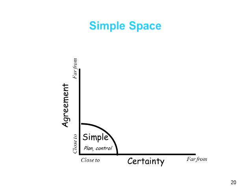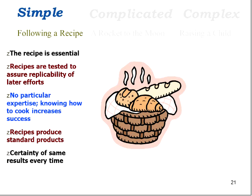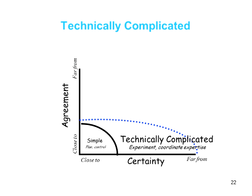In this simple space, it is possible to plan and control, to do logic models and implement them, because we have a high degree of knowledge from research about what to do and a high degree of agreement that this is a good thing to do. The metaphor we use here is following a recipe. The recipe is essential. Recipes are tested to assure replicability. If you've got a recipe, you don't need a lot of other expertise — you just need to know how to follow it. Recipes are aimed at producing the same results every time. This is what we've come to call best practices, but best practices only work where there's a high degree of certainty and agreement.